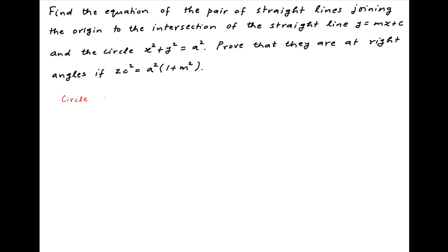The equation of the given circle is x² + y² = a². Let's denote this by equation 1. This intersects with the line y = mx + c, which can also be written as (y - mx)/c = 1. Let's denote this by equation 2.